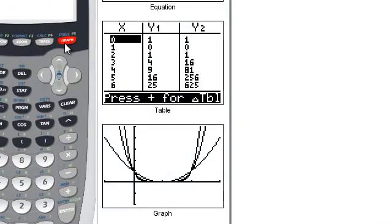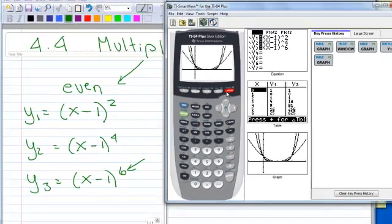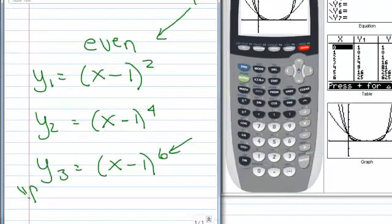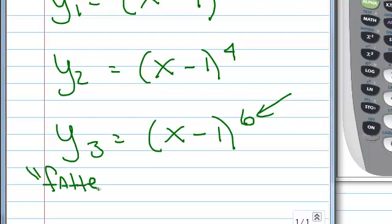First thing we should notice is when we graph even multiplicities, they get, I guess I call them fatter or wider. Notice that none of them crossed the x-axis, so they didn't cross the x-axis.